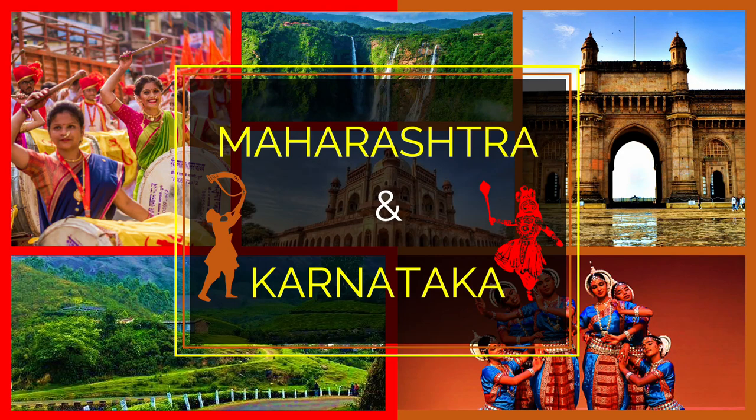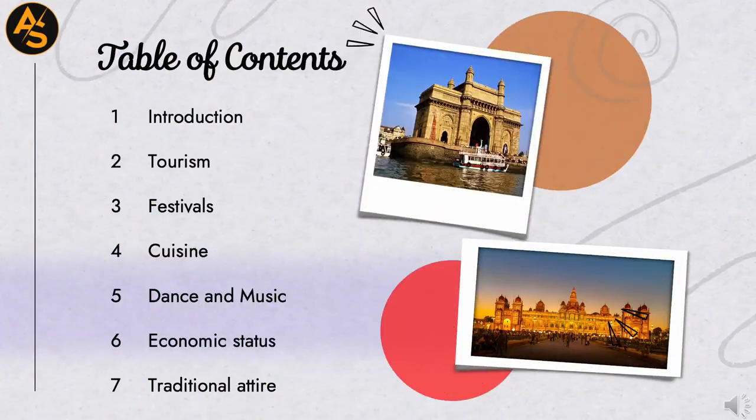Maharashtra and Karnataka. Table of contents: first, introduction; second, tourism; third, festivals; fourth, cuisine; fifth, dance and music; sixth, economic status; seventh, traditional attire.